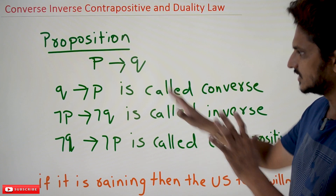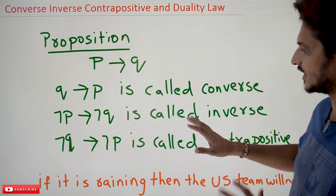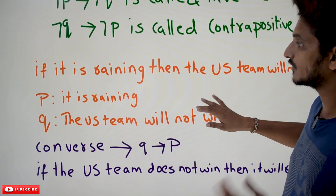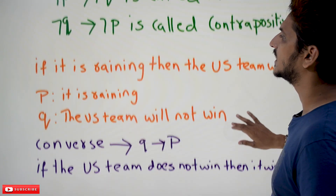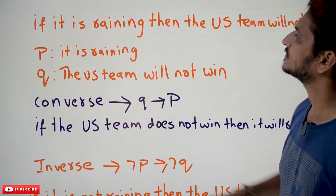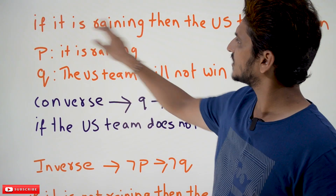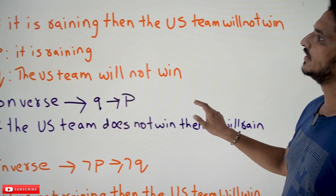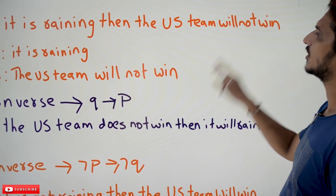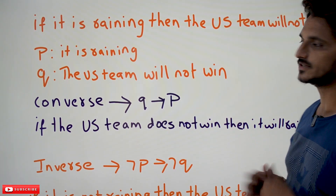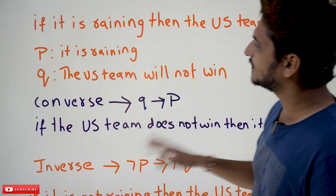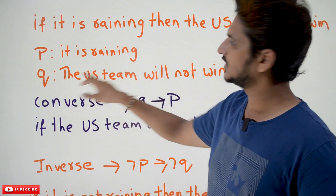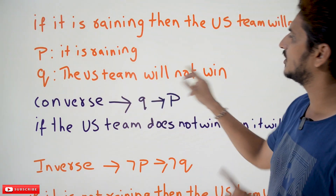It's very simple to understand. Now we will take an example to understand how we write the converse, inverse, and contrapositive for a given P implies Q. The statement is: 'If it is raining, then the US team will not win.' In this statement, P is 'it is raining' and Q is 'the US team will not win.'